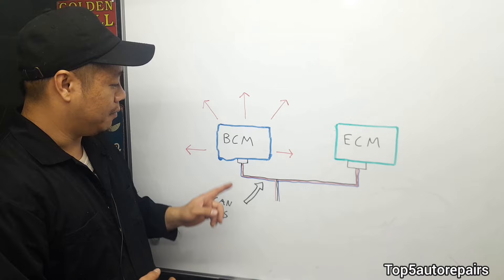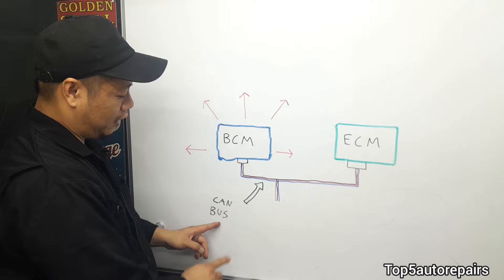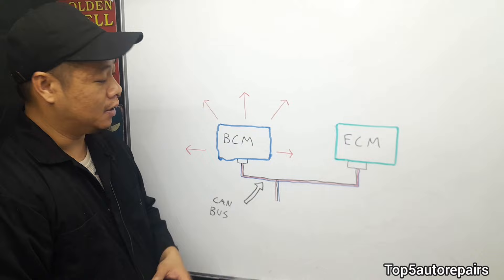Basically, when you have one computer and another computer linked together, it's going to communicate through what's called a CAN bus. So basically, that's just a series of wires where the information is traveled to.